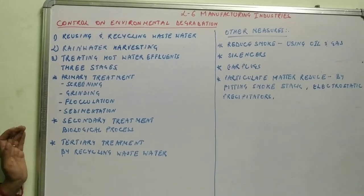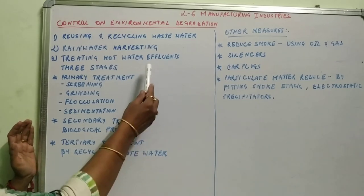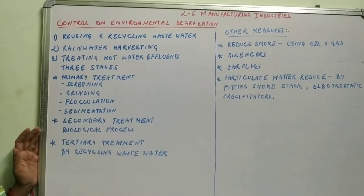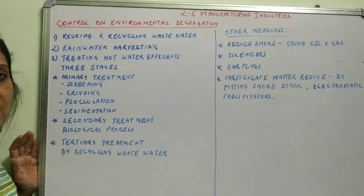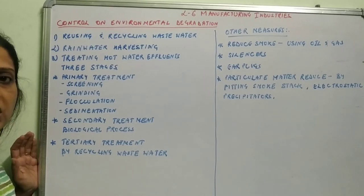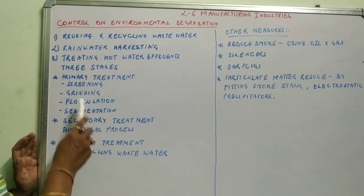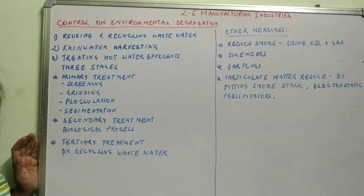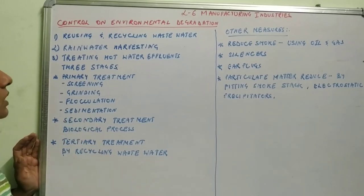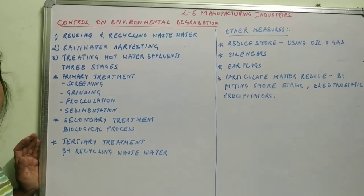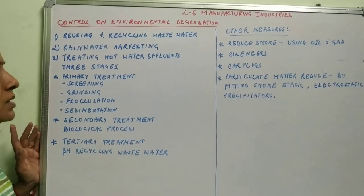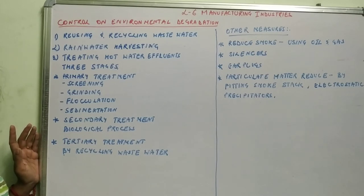Treating hot water effluents involves three stages. The first is primary treatment, done through four processes: screening — using a large sieve to separate solid and liquid waste; grinding — crushing the waste; flocculation — changing waste into a softer form and then decomposing it; and sedimentation — separating the waste from the liquid. The second is secondary treatment, which uses a biological process — decomposing waste material with the help of microorganisms.